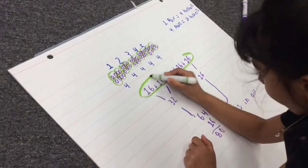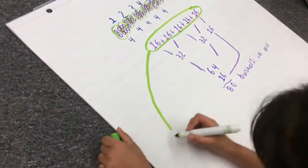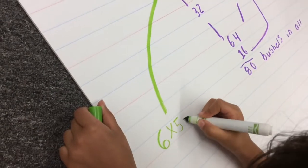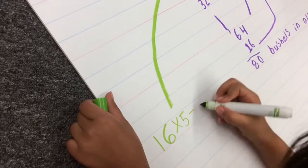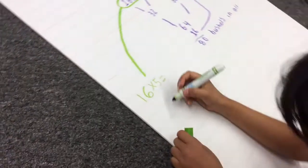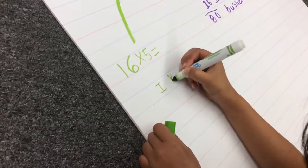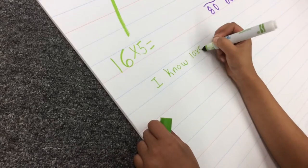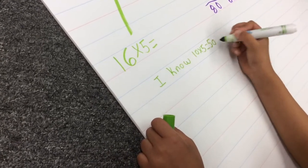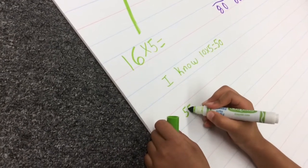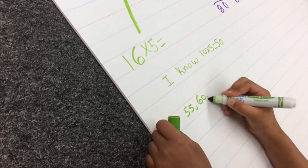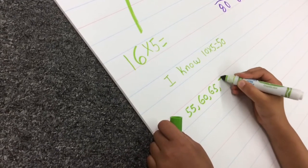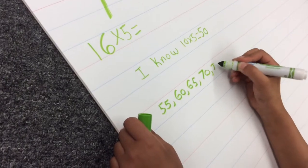Zoya tried multiplication. Sixteen bushels times five classrooms. She knew that ten times five equals fifty bushels, so she counted on by five six more times and got the same answer as I did. Eighty bushels in all.